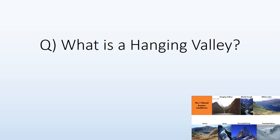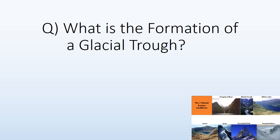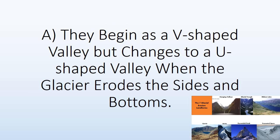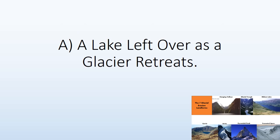A hanging valley is a valley formed by tributary glaciers. A glacial trough begins as a V-shaped valley but changes to a U-shaped valley when the glacier erodes the sides and the bottom. A ribbon lake is a lake left over as the glacier retreats.